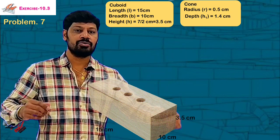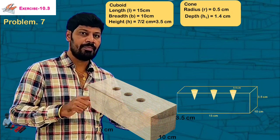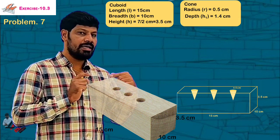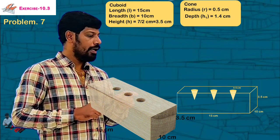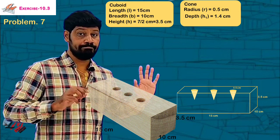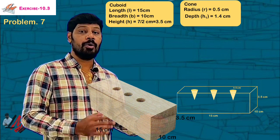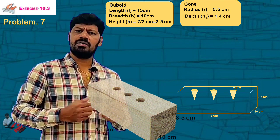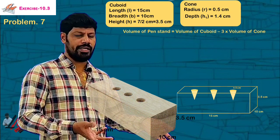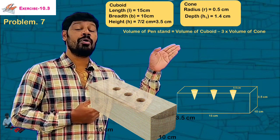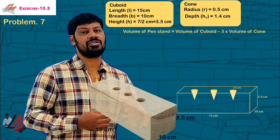Now, what is the volume of this entire cuboid after removing the cones? The volume of the pen stand is equal to the volume of the cuboid minus 3 times the volume of one cone, since there are 3 conical holes.